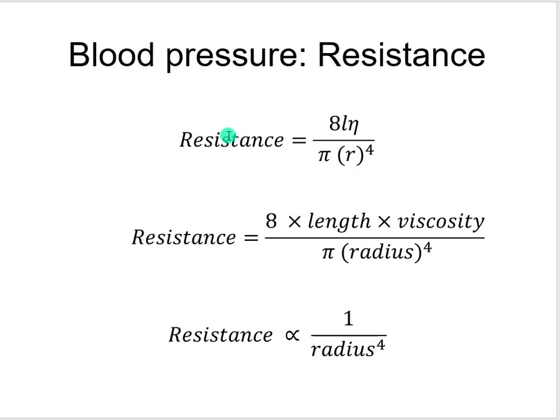If fractions seem a little confusing, just pause and remind yourself how they work — take a number like one-half and compare it to one-third, and talk about what's happening in the numerator versus the denominator. Now let's look at the numerator. We've got the number 8, L for length, and eta for viscosity.